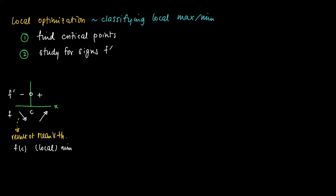Something similar occurs when the sign of the derivative is reversed. Suppose we have a stationary point c where the derivative is 0, and suppose the function increases to c and decreases afterwards. Then f(c) is a local maximum of the function. If we look just close to c, we see a kind of top of a mountain, so f(c) is a local maximum.